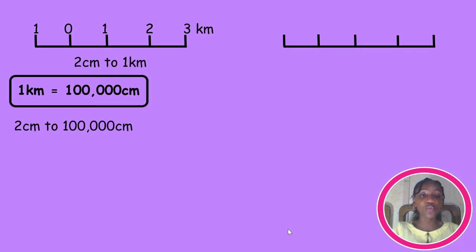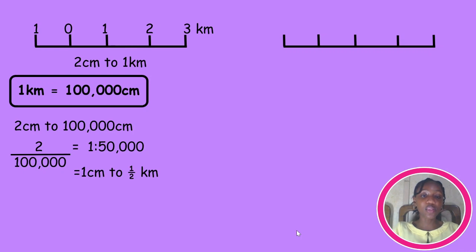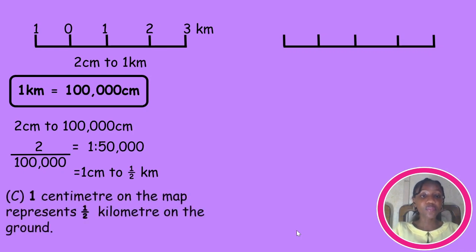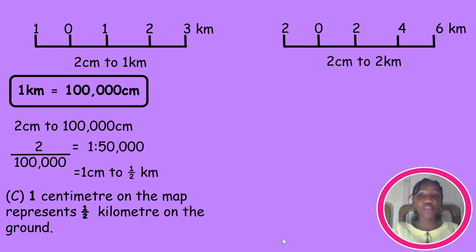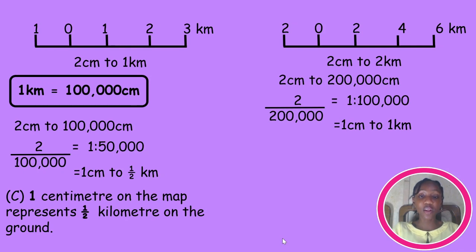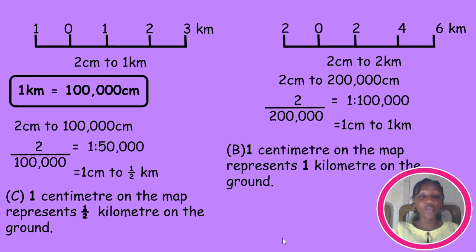Therefore, two centimeters will be the same as 100,000 centimeters. Converting this to fraction form, we have a ratio of 1:50,000, which is the same as one centimeter to half a kilometer, and this is the same as option C. Or if this wasn't the scale they intended, it could also be with an interval of two, giving us two centimeters representing two kilometers. Following the same process, that gives us a final answer of one centimeter to one kilometer, which is option B. So it could be 50-50 since we're not given numbers.